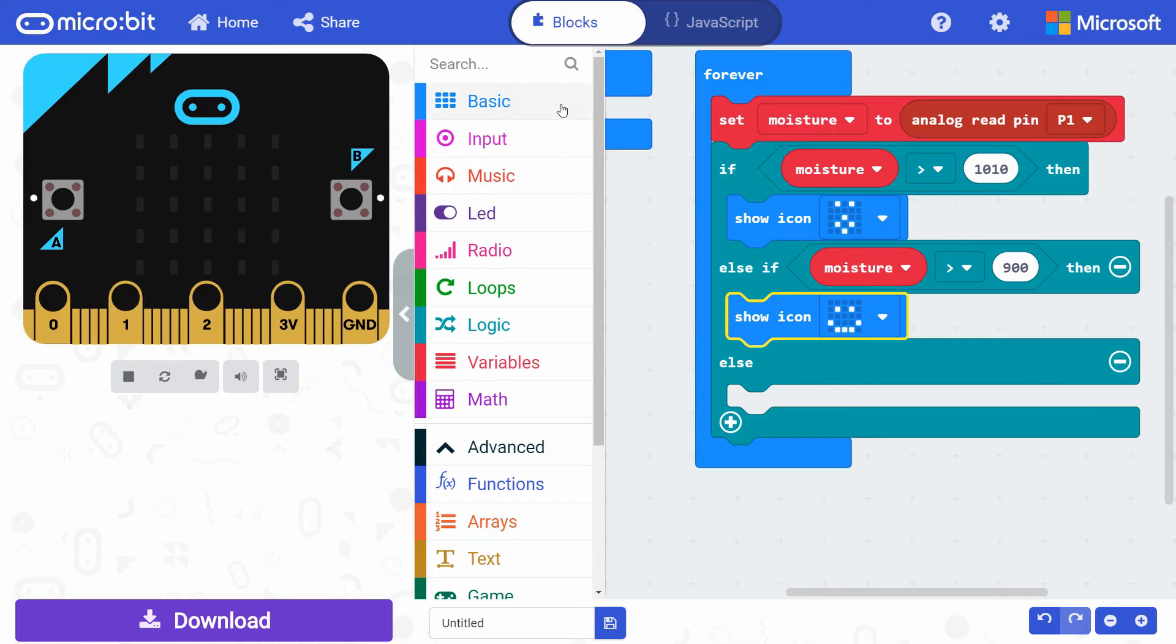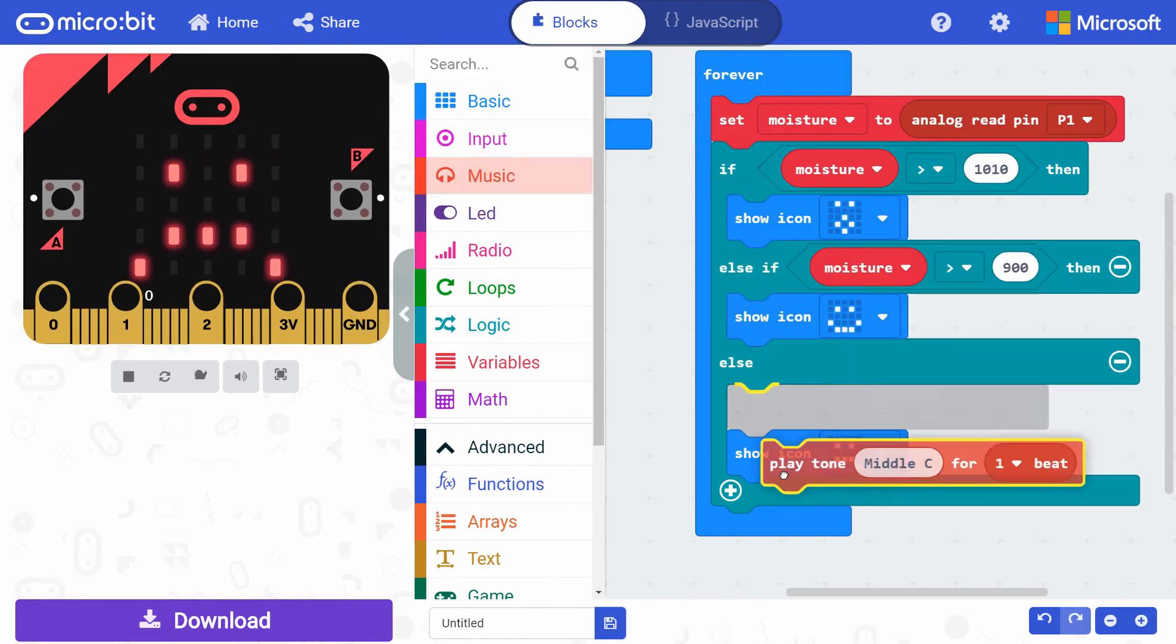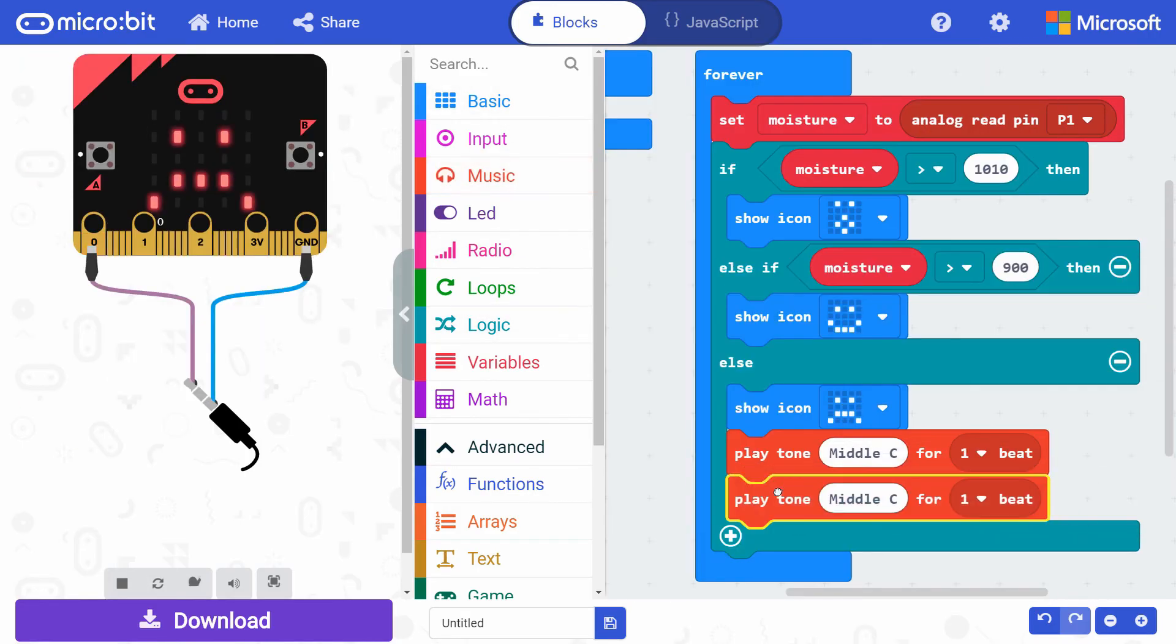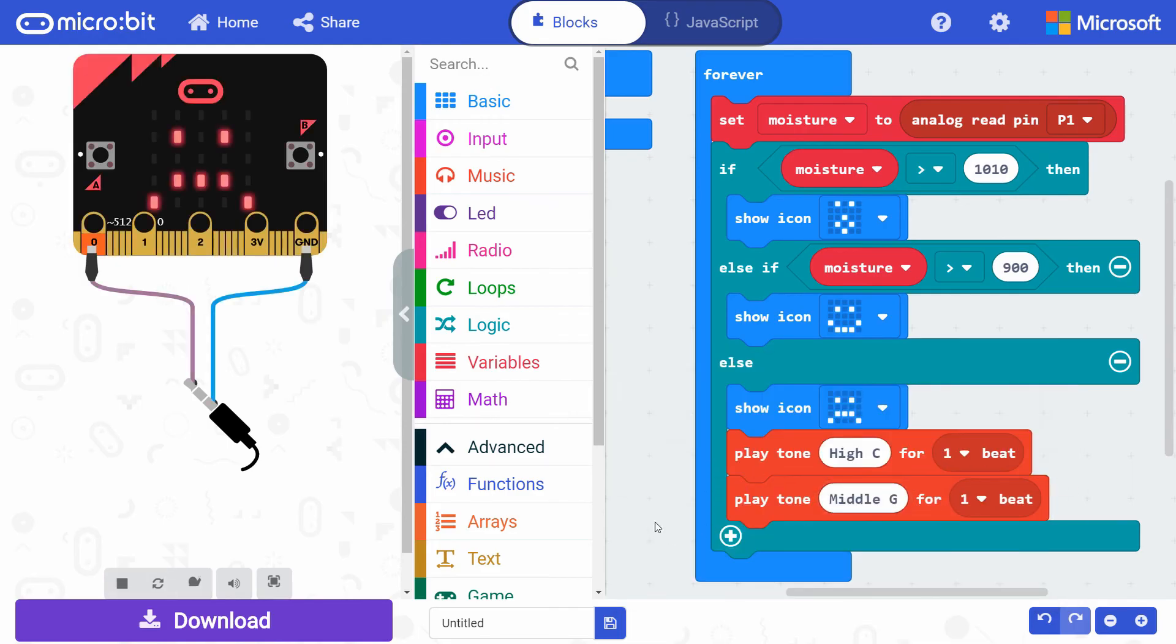Get another show icon block and place it under the else portion and change it to a frowny face. Finally, get two play tone blocks from music and put them inside the if block. Change one to high C and the other to middle G or whichever notes you want to play. Download this project to your micro:bit.